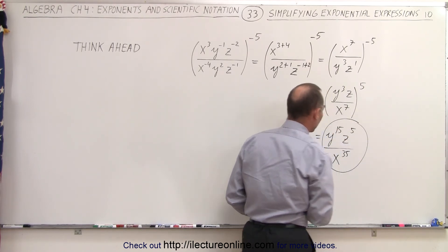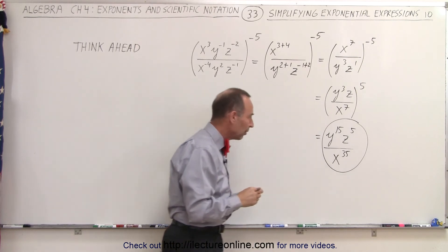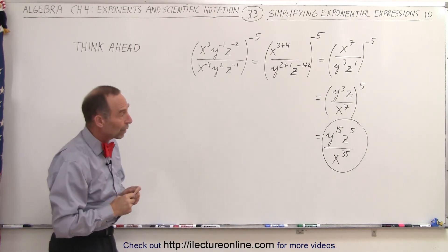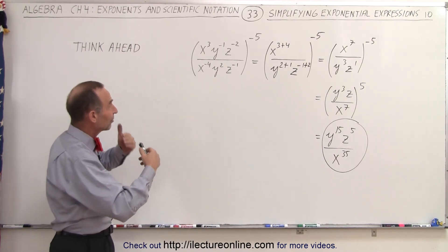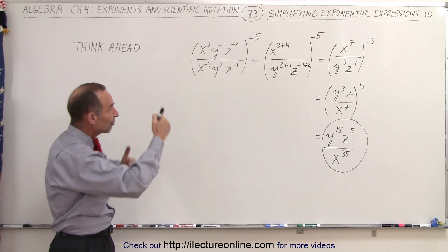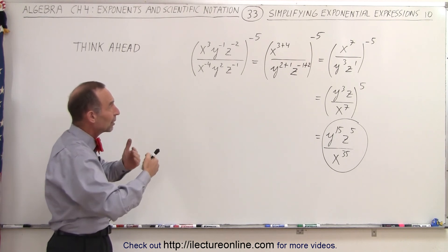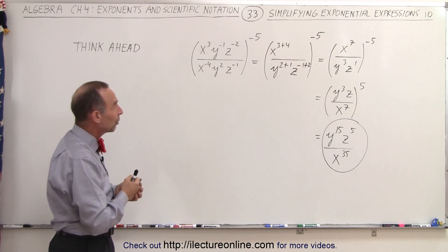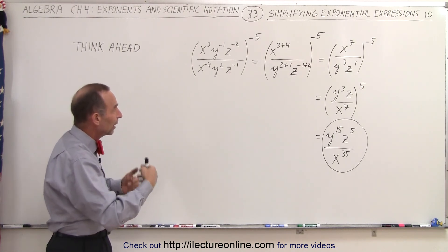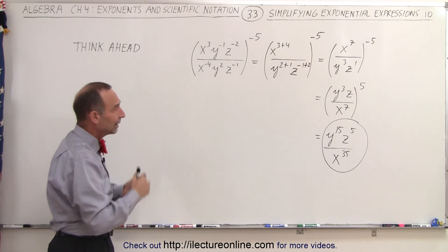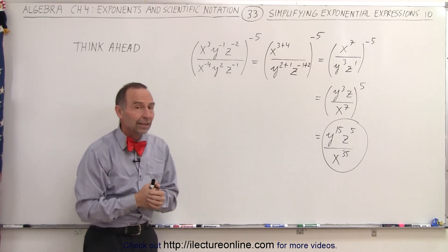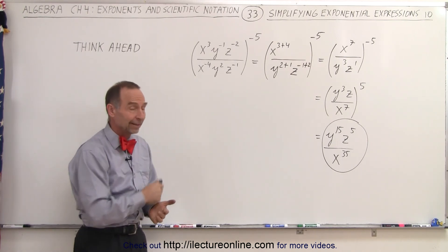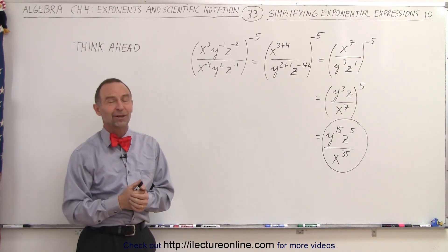And that will be the reduced form of our original equation. Notice again — let's think ahead. Let's find out where we end up with a positive exponent by moving the other exponent up or down, and then we can very quickly get the final result. And that is how it's done.